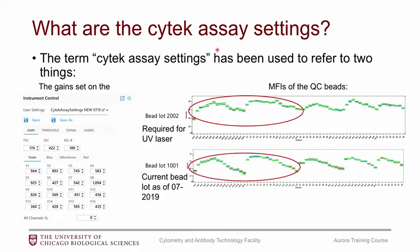So what are these SciTech assay settings? When you log into the system, you'll see a panel for instrument control with user settings and a drop-down menu. You'll see SciTech assay settings and below that are all the different gains for the forward and side scatter and all the detectors. Once you start talking to SciTech more, you learn about target MFIs. If you run QC beads at these default gains, you can calculate the MFI for each detector, giving you a target MFI for every detector.